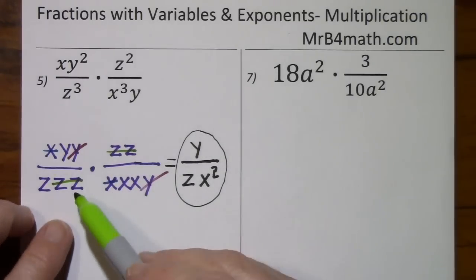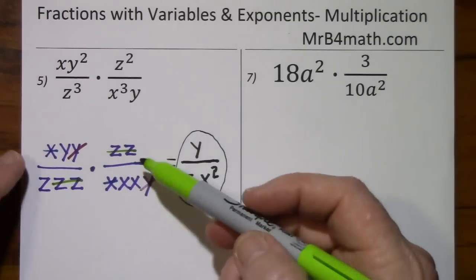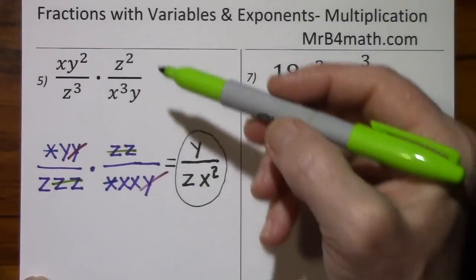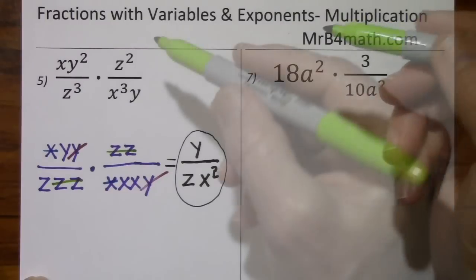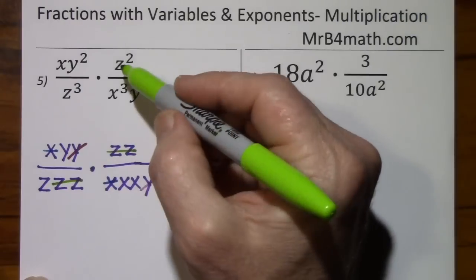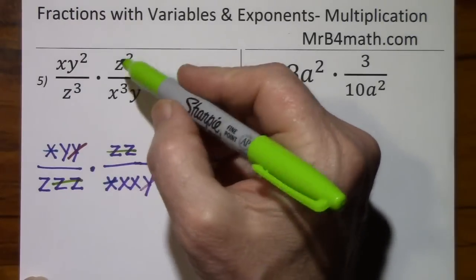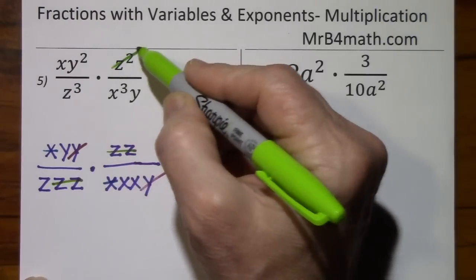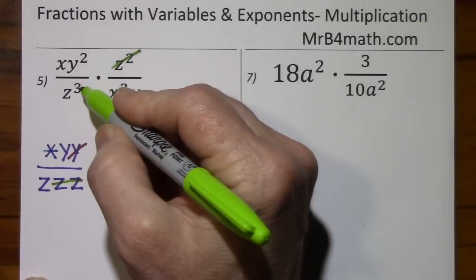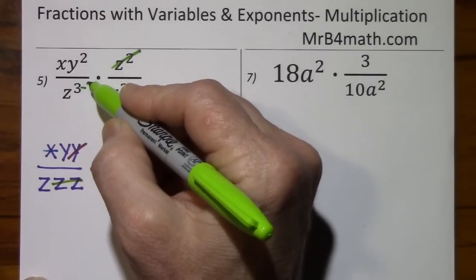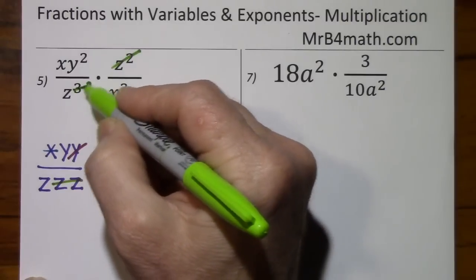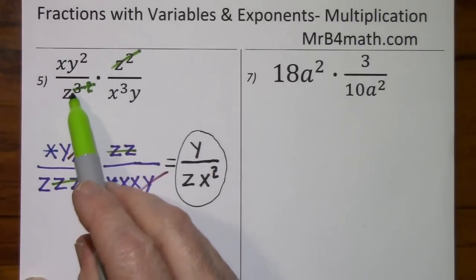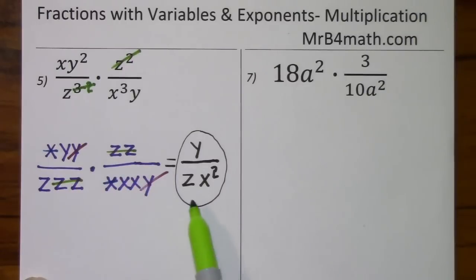But in effect, you can use this method. But if you can learn to just subtract exponents, it will speed things up. Let's look at the z's. This is z times z. If I cancel both of these, I subtract two from three and I'm left with one. So z to the first power. And look in our answer, we have z to the first power.